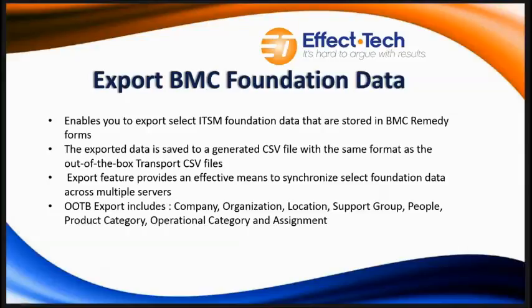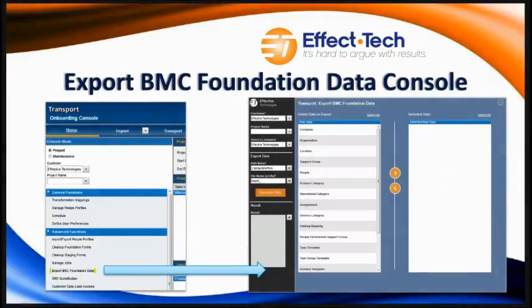It also includes product and operation categorizations, assignments, just to name a few. To get to the BMC Foundation data console, it's within our onboarding console. Under the Transport onboarding console, you will go to Advanced Functions, and from there, Export BMC Foundation Data is the link you'll click.